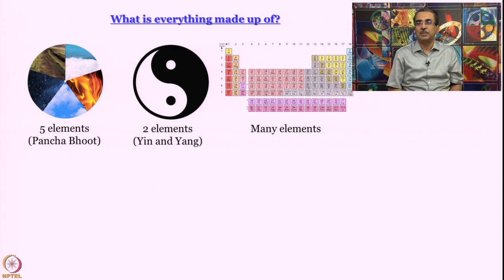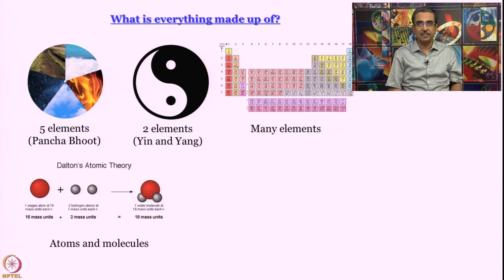But then the question does not stop there. Let us take any one element—iron or hydrogen or whatever. Suppose I take a piece of iron and keep breaking it down, making smaller and smaller pieces. The question is: do I stop somewhere or can I keep on making smaller pieces? Again, in ancient Indian civilization, an answer was provided by a scholar whose name is believed to be Kanad. Kanad actually said that everything is made up of small fundamental particles. That was resonated much later in Dalton's atomic theory that we would have studied in class 8, that everything is made up of atoms. Hence, we go to the concept of atoms and molecules.